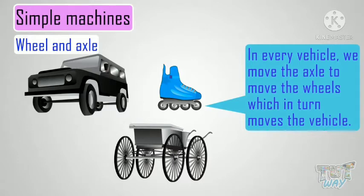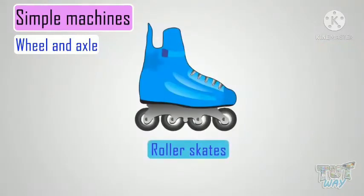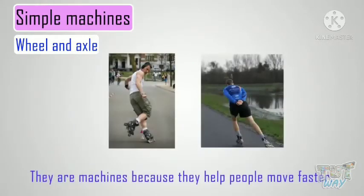Let's see some examples. Roller skates are made up of many wheels and axles. They are machines because they help people move faster. You can find a wheel and axle used almost everywhere.